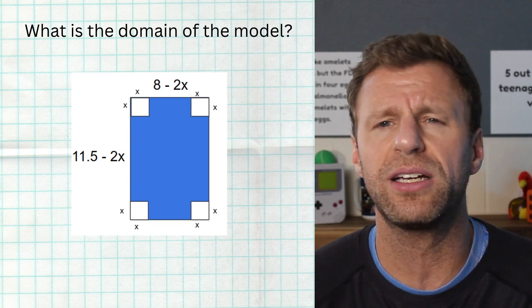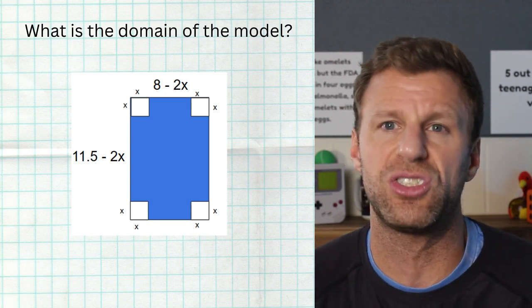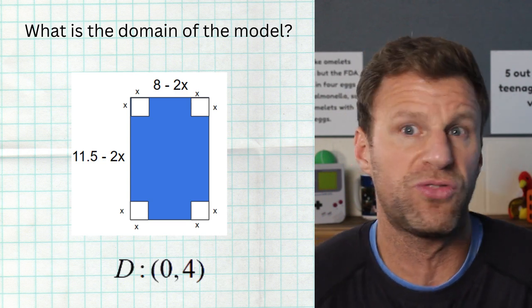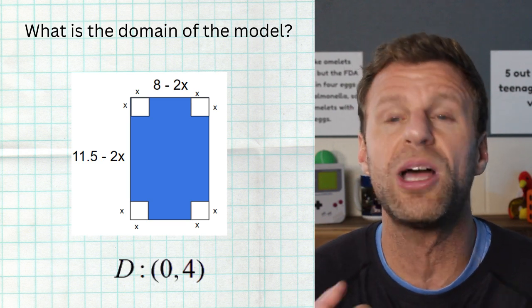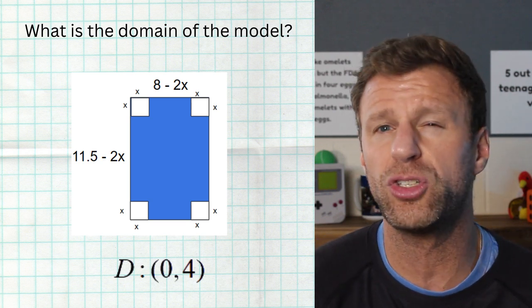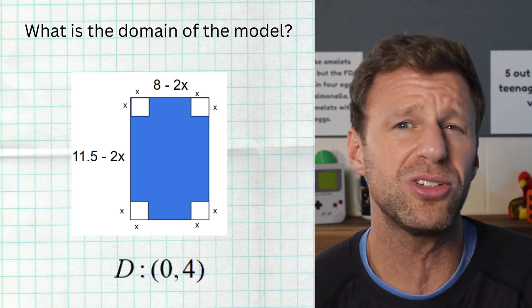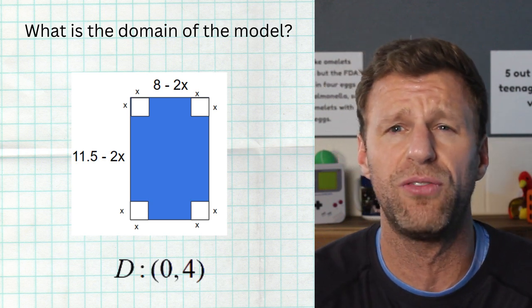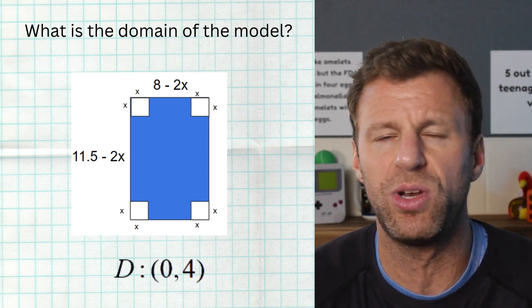So essentially, we say the domain is zero to four with parentheses. So zero is not included because you can't cut out zero. Four is not included because you can't cut out four. But it would be right in between or somewhere in between zero and four. Could be extremely small, creating a very flat box. Could be really close to four, like 3.9. That's going to be a very tall, skinny box with very low volume. But again, that's the domain. I could cut out any amount between zero and four.